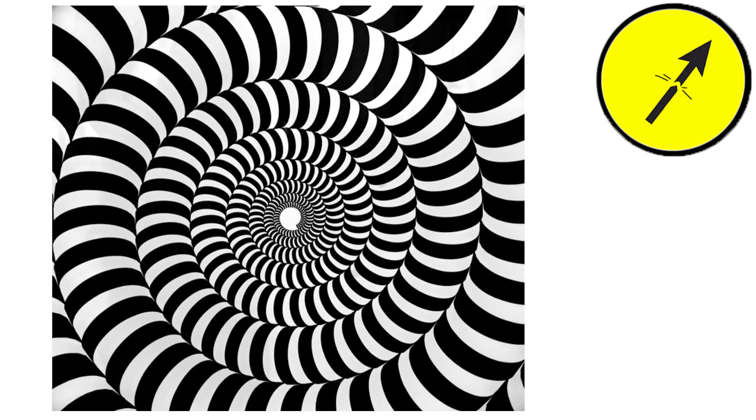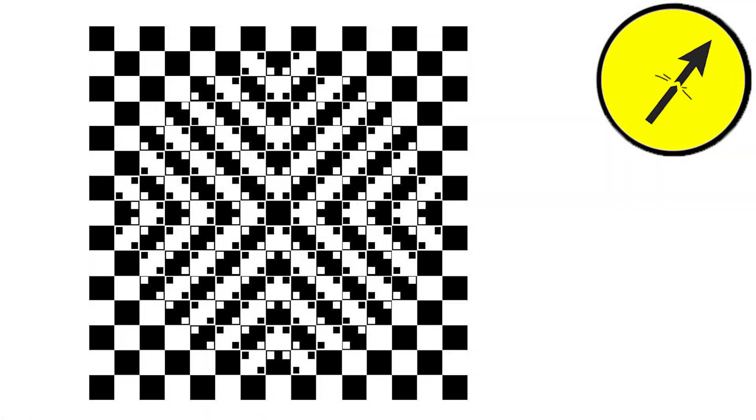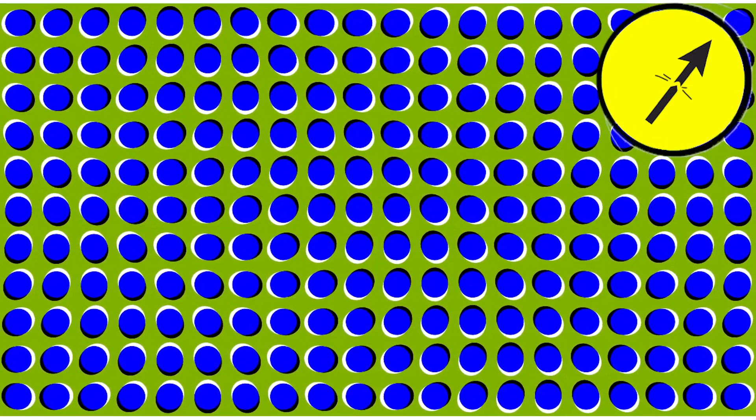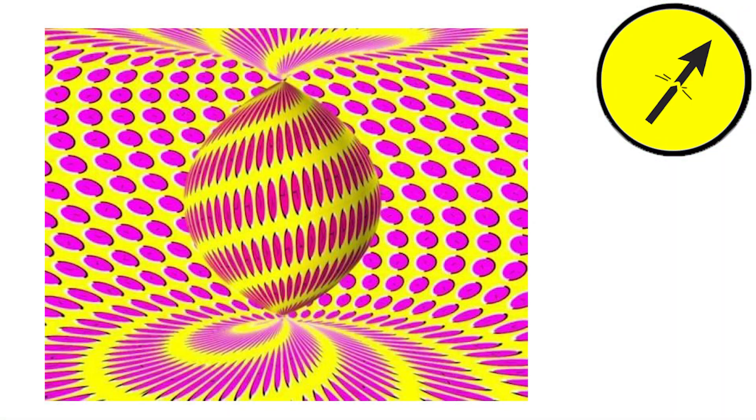This illusion is that when a horizontal line intersects crossed diagonal lines at an angle, they appear to be out of alignment.